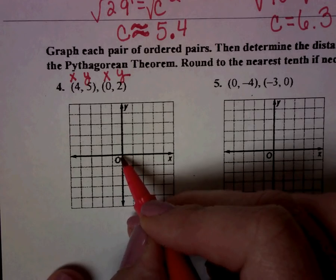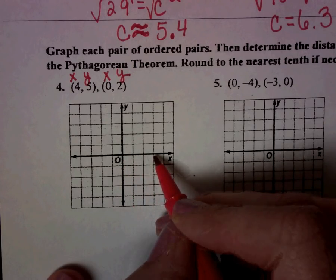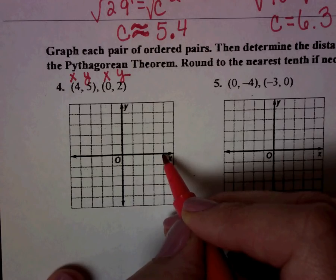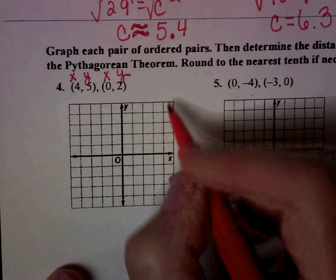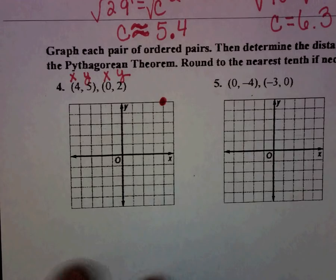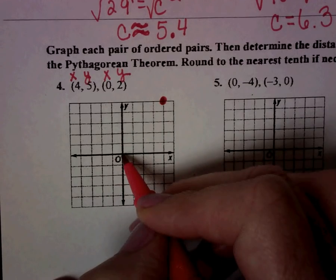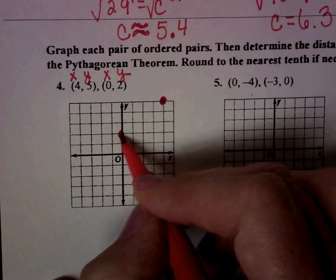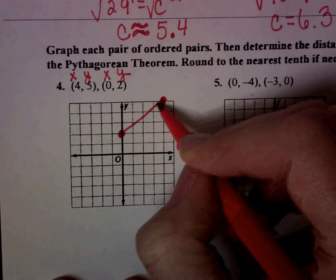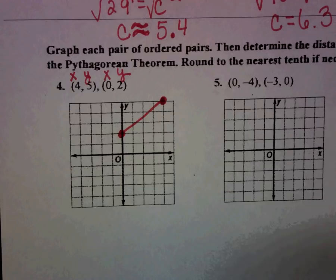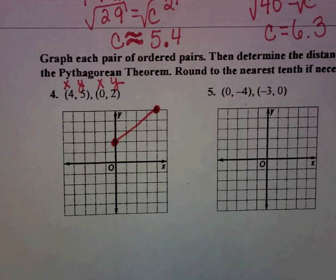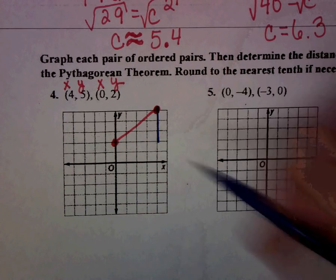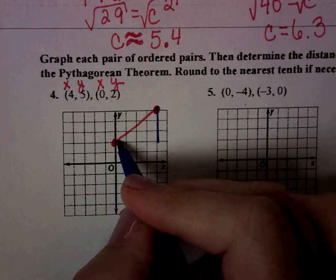I've got X is 4. So 1, 2, 3, 4. Y is 5. 1, 2, 3, 4, 5. So here's my first point. 0, 2, I'd start in the middle, 0, and then I would just go up 2. So here is my line that I'm trying to find the distance between. So now I would draw my right triangle. Down and across.